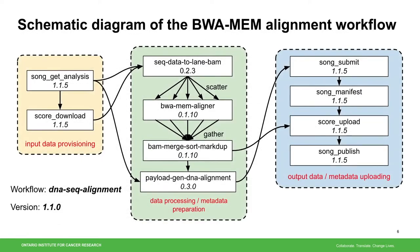This is a schematic diagram of our BWA alignment workflow. It follows our best practices, breaking down the workflow into small single-purpose tools that are independently versioned. Components for input data provisioning and output uploading can be imported into other workflows easily without code duplication. When one component bumps to a new version, the workflow will get a new version bump as well, which is very helpful for tracking workflow reproducibility.